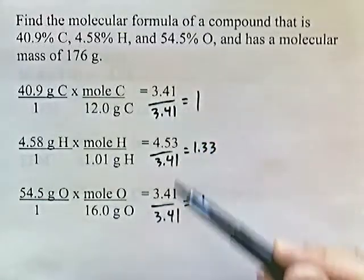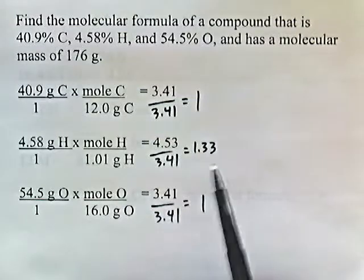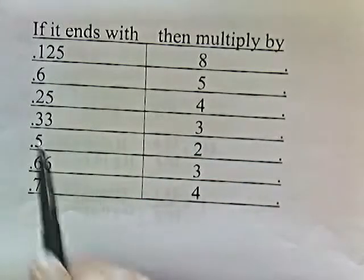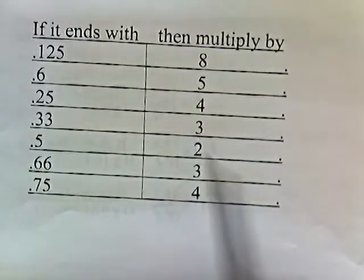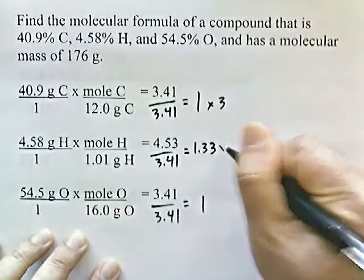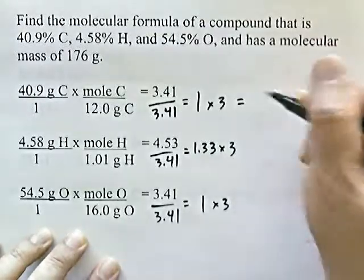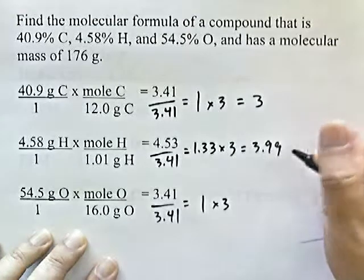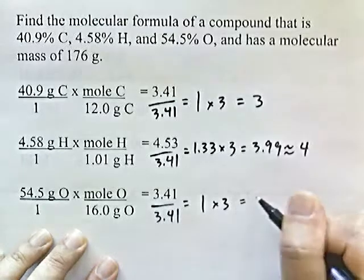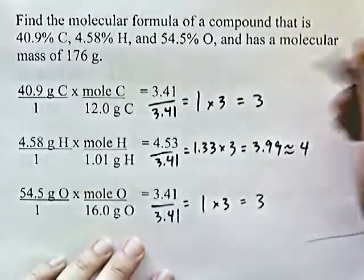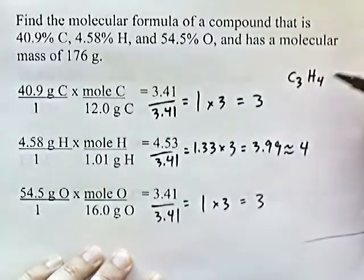Normally dividing by the smallest moles gives whole numbers, but 1.33 is not close enough to a whole number. Since we didn't get whole numbers, we use the if-then chart from the previous lecture: if it ends with .33, multiply everything by 3. Multiplying 1 × 3 gives 3; 1.33 × 3 gives 3.99, which rounds to 4; and 1 × 3 gives 3. So the ratio of carbon to hydrogen to oxygen is 3 to 4 to 3, and the empirical formula is C3H4O3.